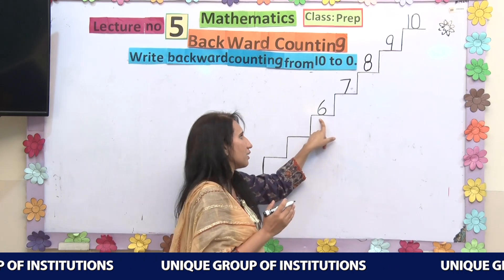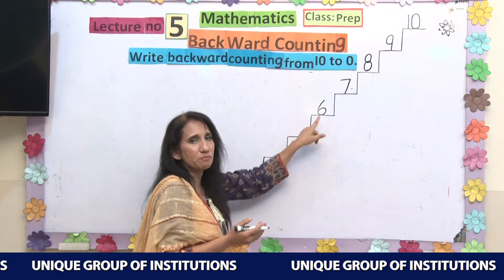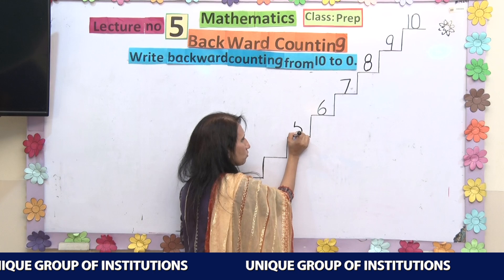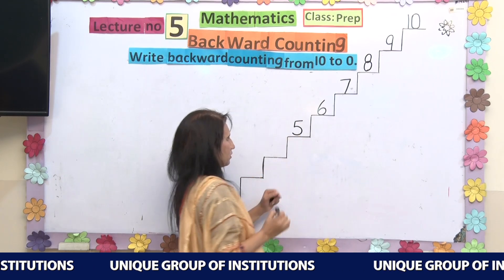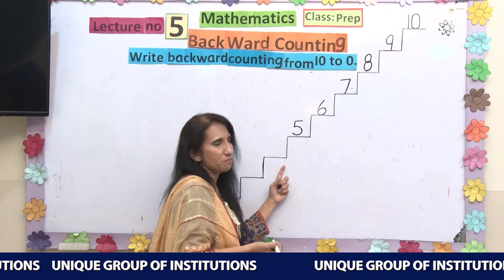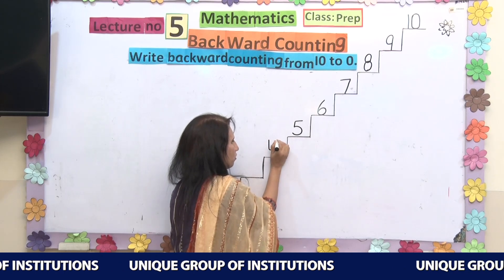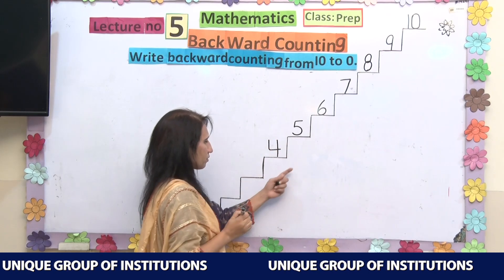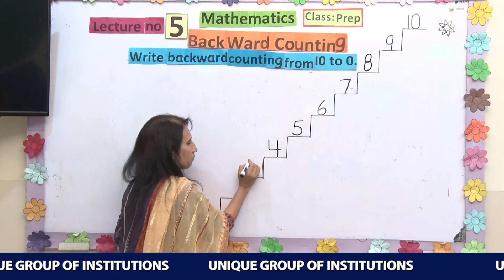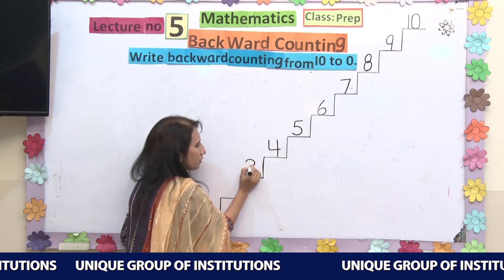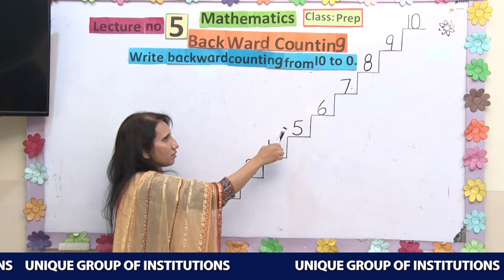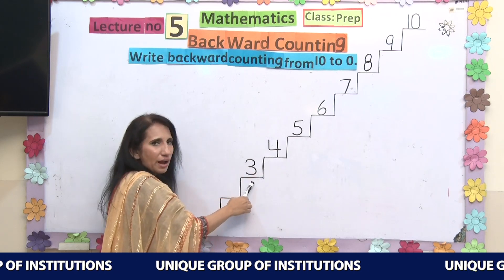Now recall what comes before number 6. Before number 6, we have number 5. This is number 5. And before number 5, we have number 4. So let's write number 4. Before number 4, what do we have? We have number 3. I am going to write number 3 here. So: 10, 9, 8, 7, 6, 5, 4, and 3.